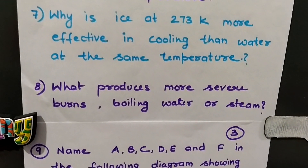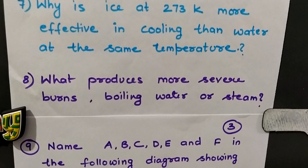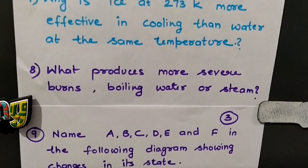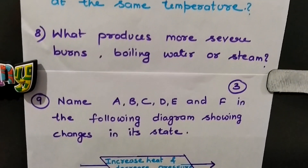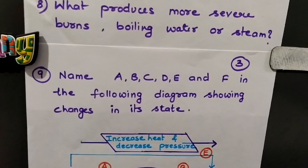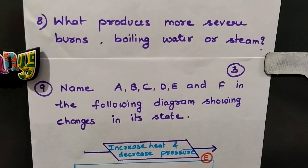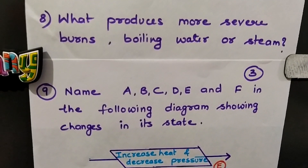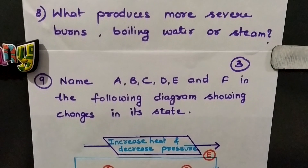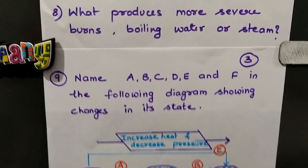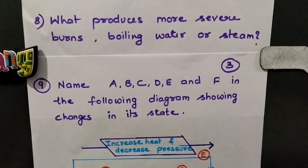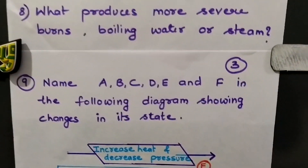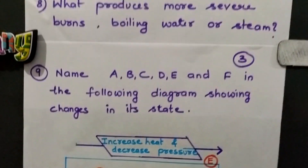Question 8: Why does steam produce more severe burns on the skin compared to boiling water? Steam is formed when water at its boiling point (100°C) absorbs latent heat of vaporization. Therefore, steam carries more energy than boiling water, and this extra energy is why steam produces more severe burns on the skin than boiling water.